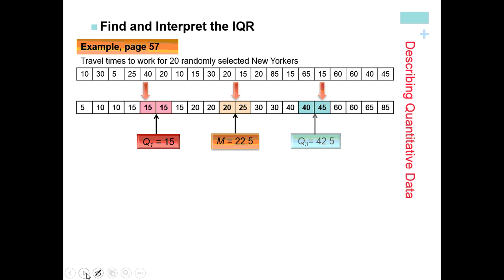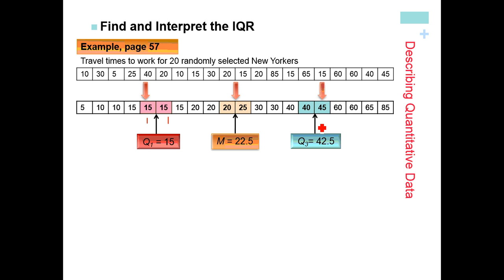We're left with the bottom 10 and top 10. For the bottom 10, we take the average of the 5th and 6th pieces of data — that's the first quartile. Both are 15, so Q1 = 15. For the top 10, we average the two middle values — 40 and 45 — giving Q3 = 42.5. So the lower quartile is the borderline for the bottom 25% and the upper quartile for the top 25%. You could say 50% of the data range between 15 and 42.5.